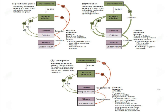Granulosa cells, under the influence of FSH, convert estradiol into estrogen. The high estrogen concentrations eventually lead to a decrease in FSH, resulting in atresia of all but one of the developing tertiary follicles — starting a negative feedback loop that signals the anterior pituitary to stop producing more FSH and LH. It then switches to positive feedback, where elevated estradiol from the dominant follicle stimulates the LH surge that triggers ovulation and marks the end of the follicular phase.